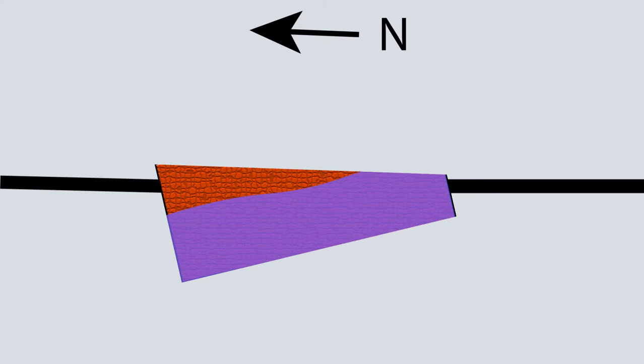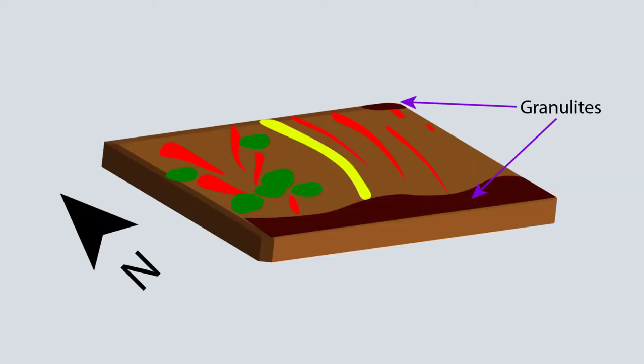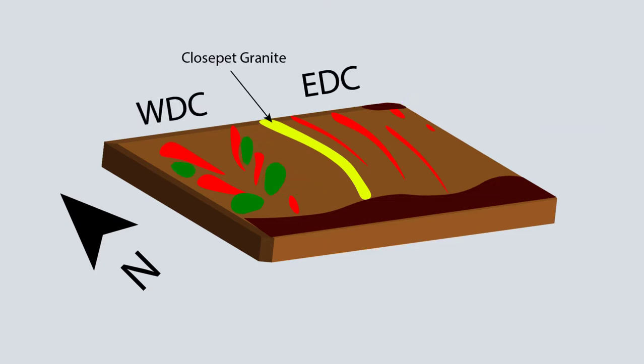In eastern Dharwar Craton, the extent of metasomatism was greater than western Dharwar Craton. This is marked by the presence of Karimnagar granulite belt in the north of eastern Dharwar Craton. This is how Dharwar Craton formed, which was the first of the Deccan protocontinent.